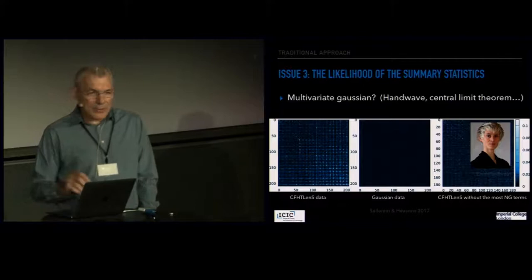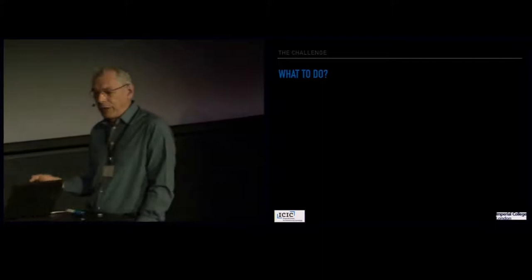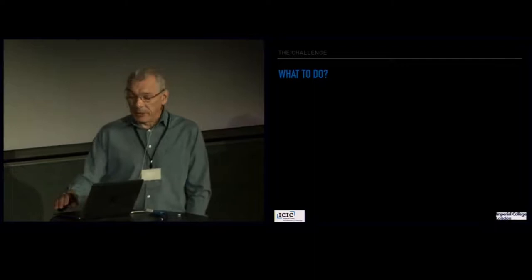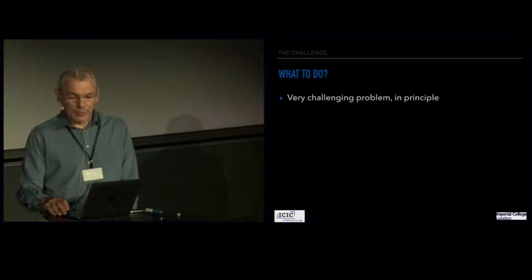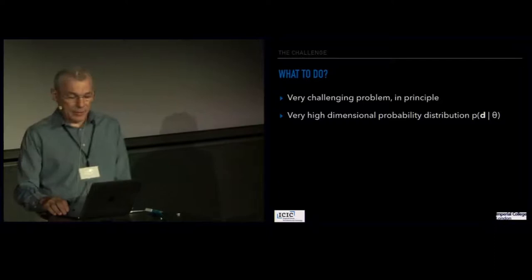The question is then what to do with this non-Gaussian data that we receive from the low-redshift universe. It's a very challenging problem in principle because of the very high dimensionality of the probability distributions — the probability of the data given the model is a very high-dimensional, say 10,000-dimensional, space.